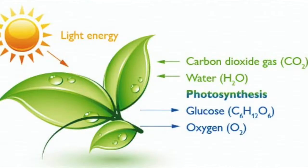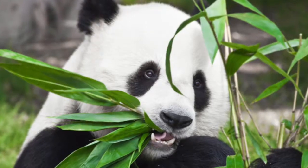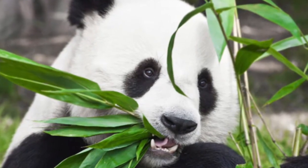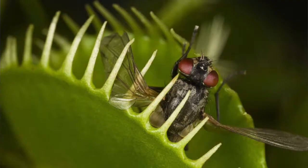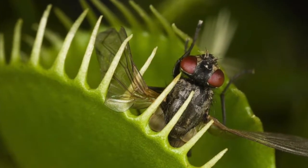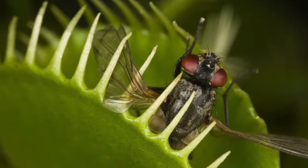Inside ecosystems, energy is constantly moving. Most energy in ecosystems starts when plants consume energy from the sun during the process of photosynthesis. As animals eat plants, and animals eat other animals who have eaten plants, energy is transferred over and over again.